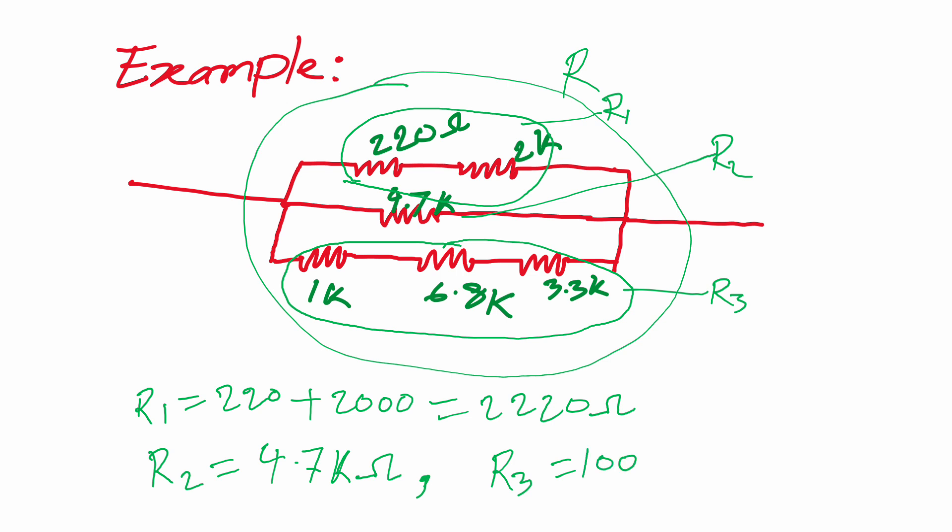1K means 1000 plus 6.8K plus 3300. So all together is 11100, that means 11.1K ohm. So that's the R3.